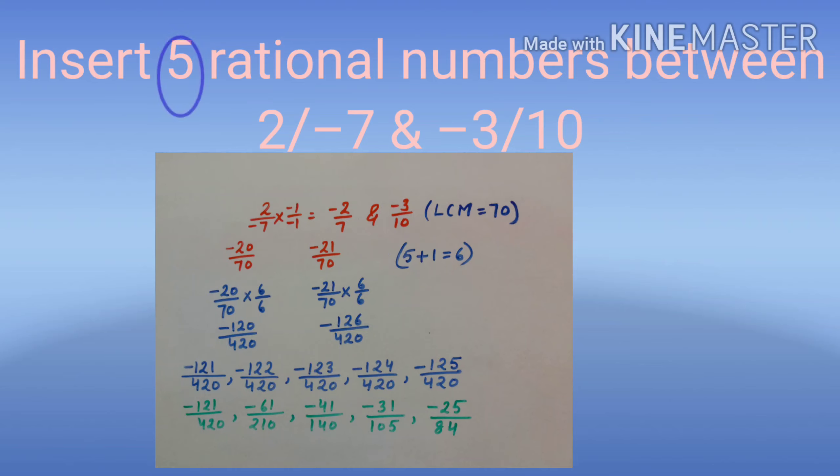Like, we need to write five rational numbers here. So, its successor is 6. We will multiply minus 20 upon 70 and minus 21 upon 70 by 6 upon 6. We get minus 120 upon 420 and minus 126 upon 420.